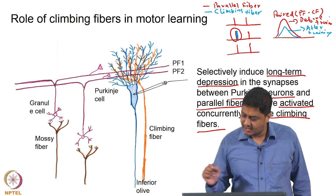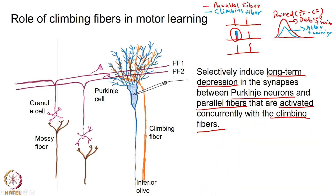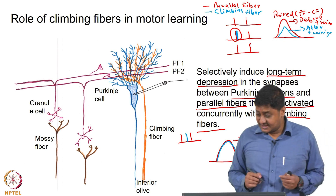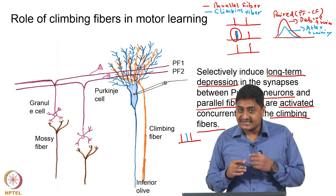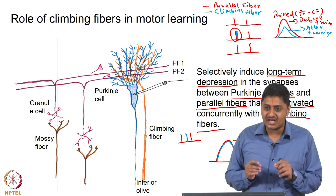If climbing fiber activity is not paired with parallel fiber activity — that is, if climbing fiber activity occurs independently without relation to parallel fiber activity — then after training you will see a very similar response to before training. This tells us that when climbing fiber activity accompanies parallel fiber activity, it tells the Purkinje cell that what has happened is a mistake: reduce your activity.